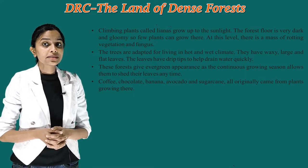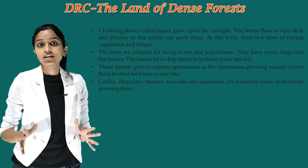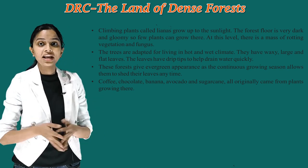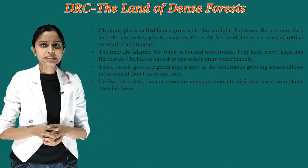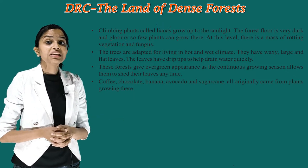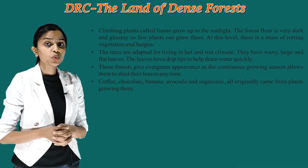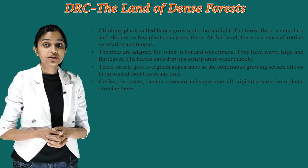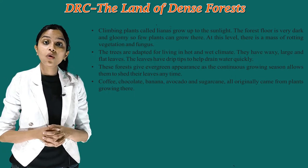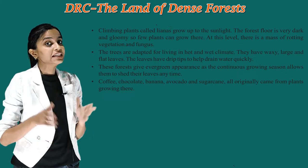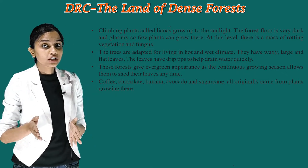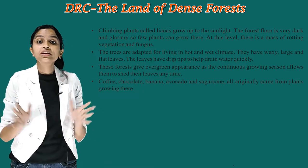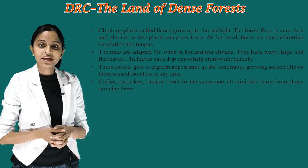At this level, there is a mass of rotting vegetation and fungus. The trees are adapted for living in a hot and wet climate. They have very large and flat leaves. The leaves have drip tips to help drain water quickly. These forests give an evergreen appearance as the continuous growing seasons allow them to shed their leaves anytime. Coffee, chocolate, banana, avocado and sugar cane all originally came from plants growing here.